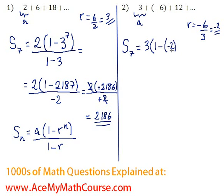Now it's always very nice to put brackets around r, especially if it's negative. And we have it to the power of seven all over one minus negative two.